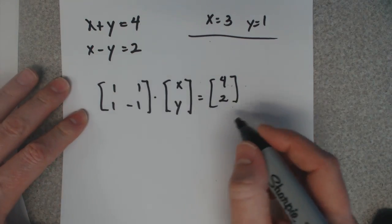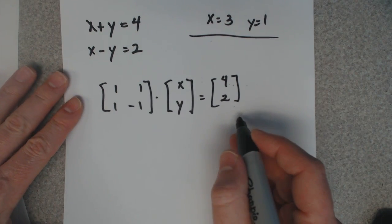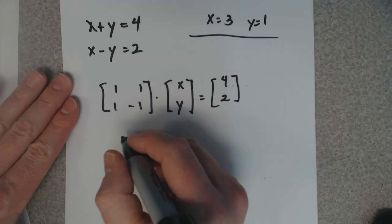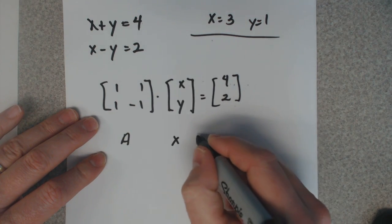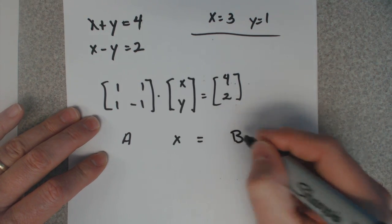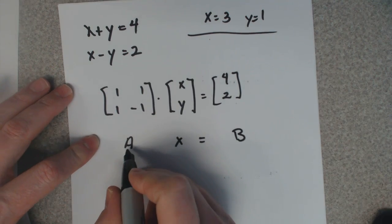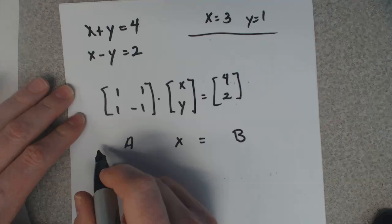So you get your matrix equation. Well, the idea here is if you take, I'm just going to call this matrix A, this matrix X equals matrix B.